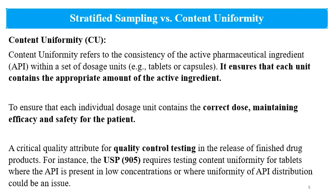Content Uniformity, or Uniformity of Dosage Units, refers to the consistency of the active pharmaceutical ingredient (API) or drug substance within a set of dosage units. These dosage units may be capsules or tablets. This CU test ensures that each unit contains the appropriate amount of active ingredient confirming to the label claim with some permissible variations.